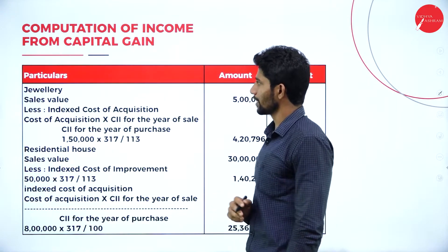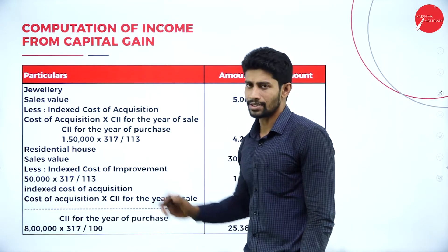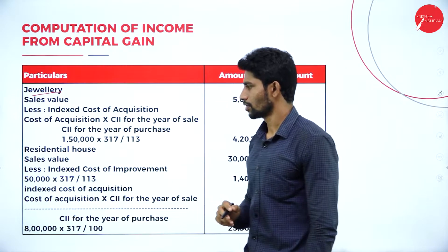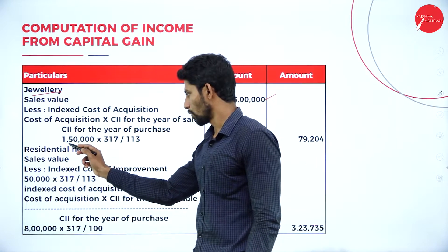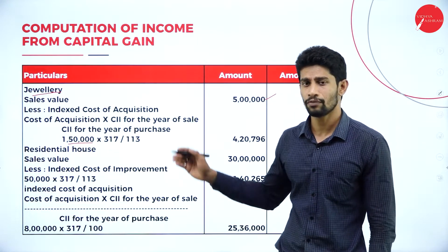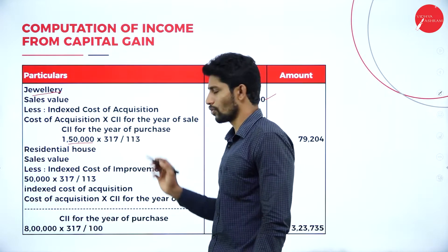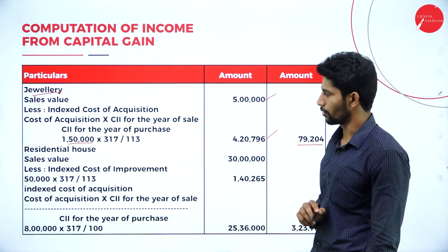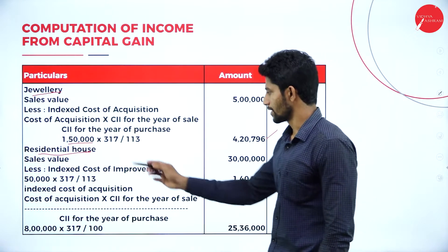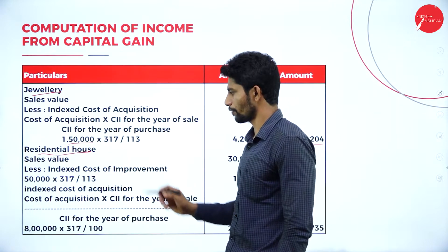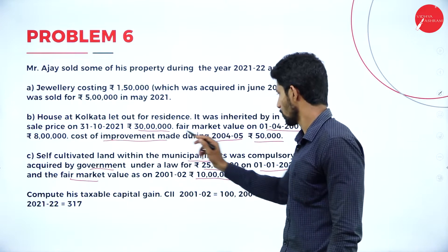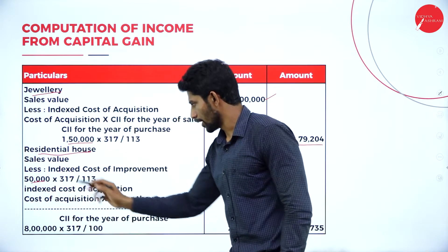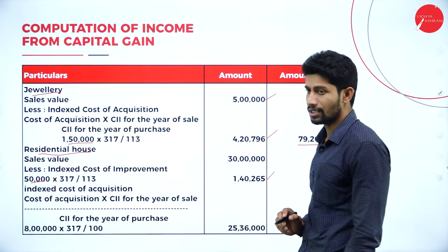Computation of Income from Capital Gain for Mr. Ajai — three assets. Asset 1, Jewelry: Sales value rupees 5 lakhs; less indexed cost of acquisition = 1,50,000 × 317 ÷ 113 = rupees 4,20,796; capital gain = rupees 79,204. Asset 2, Residential House: Sales value rupees 30 lakhs; less indexed cost of improvement = 50,000 × 317 ÷ 113 = rupees 1,40,265.